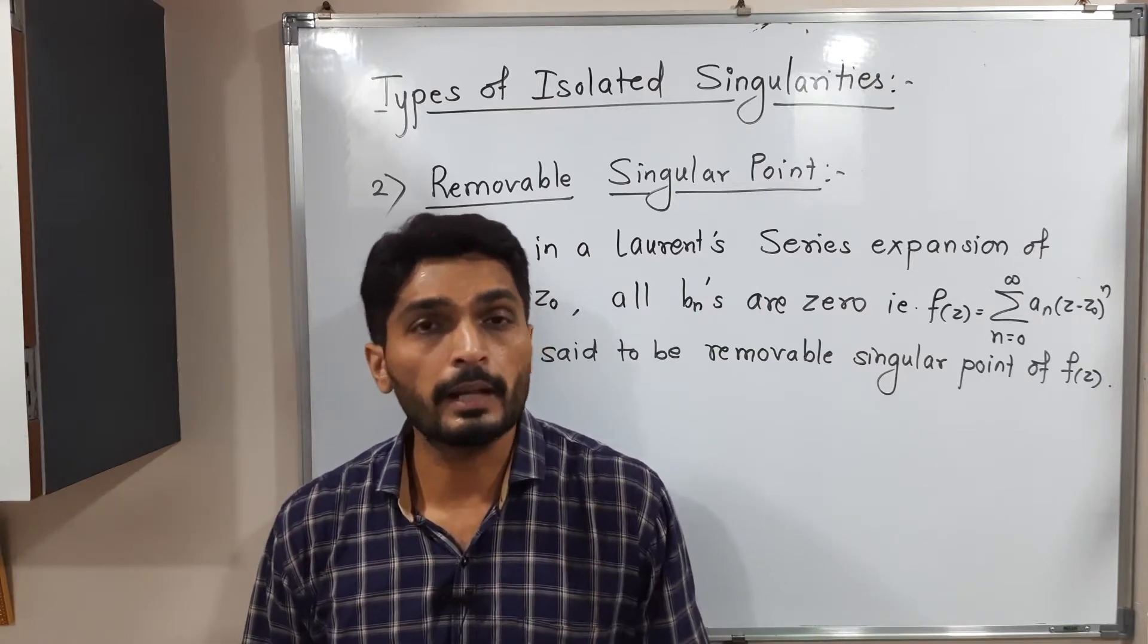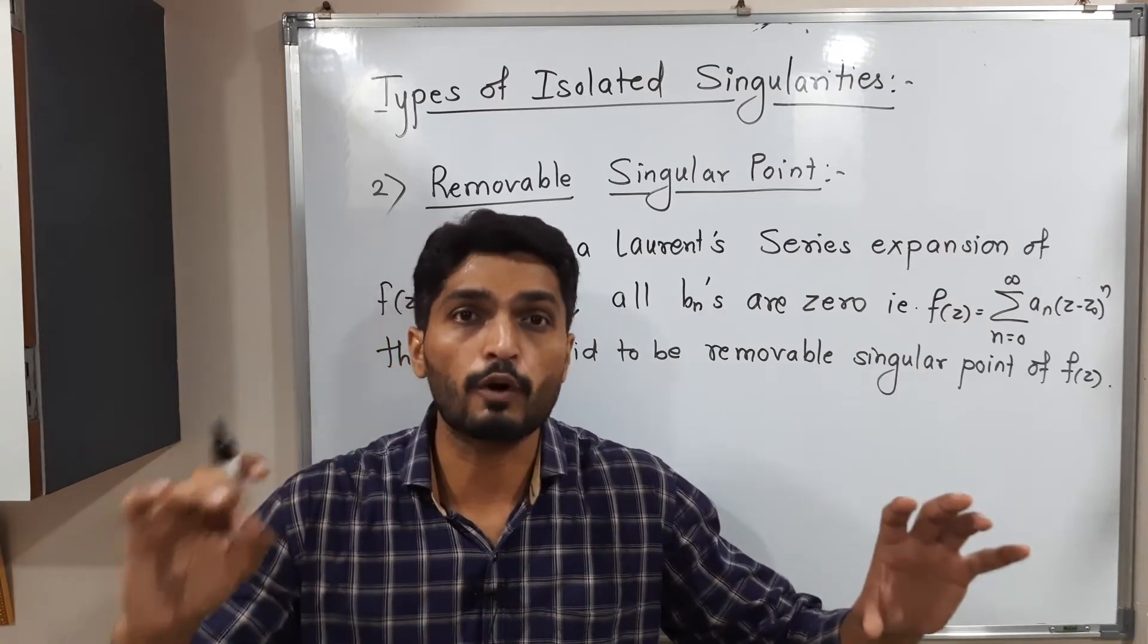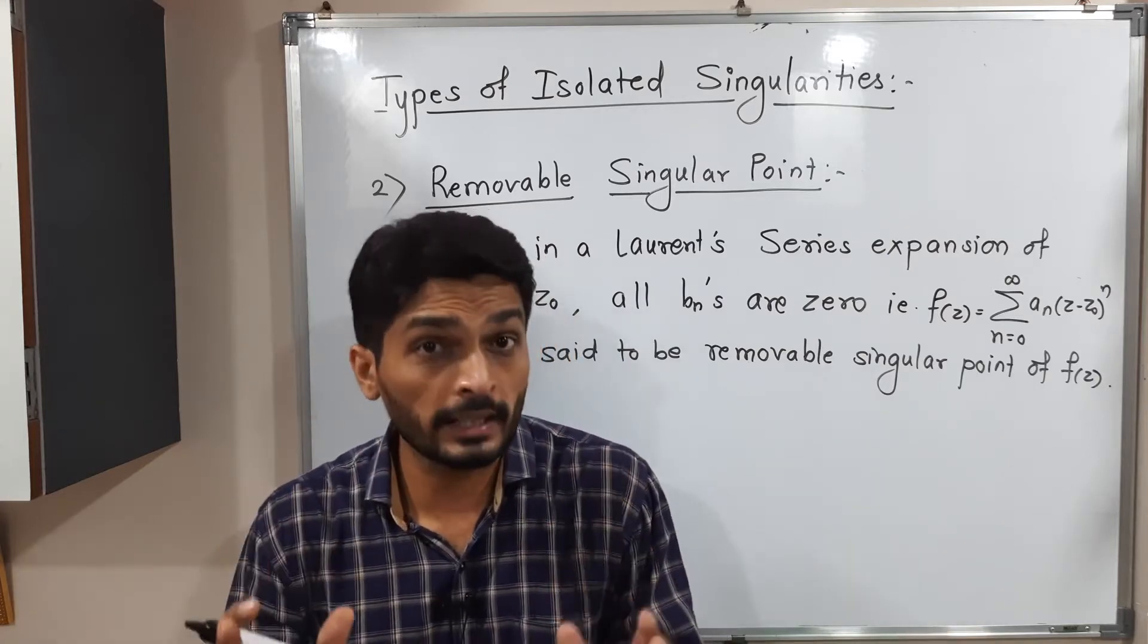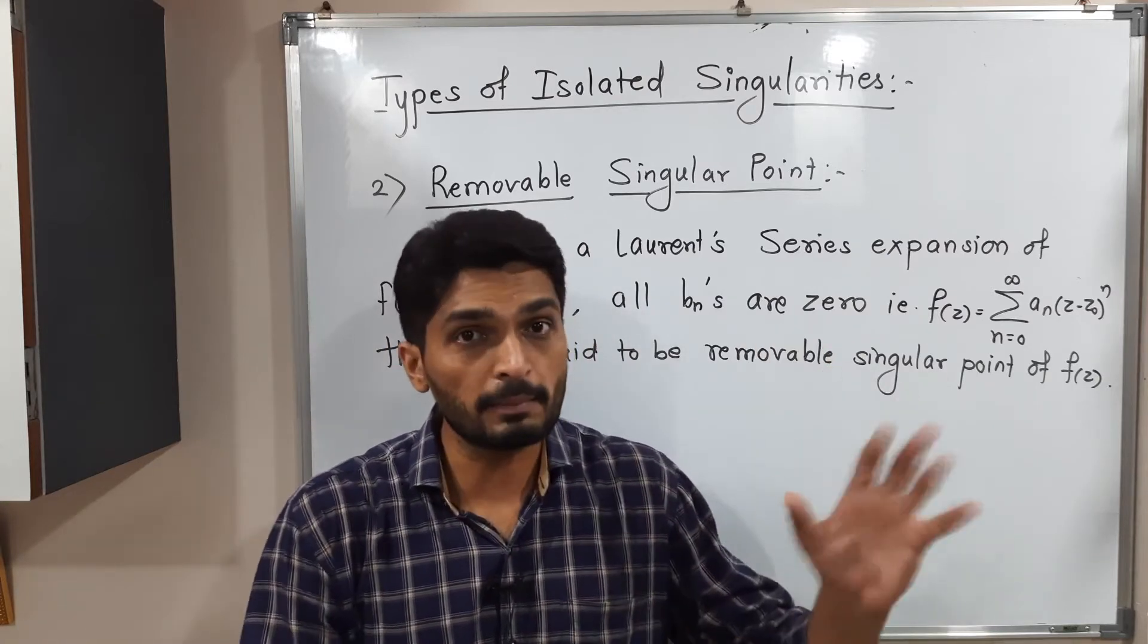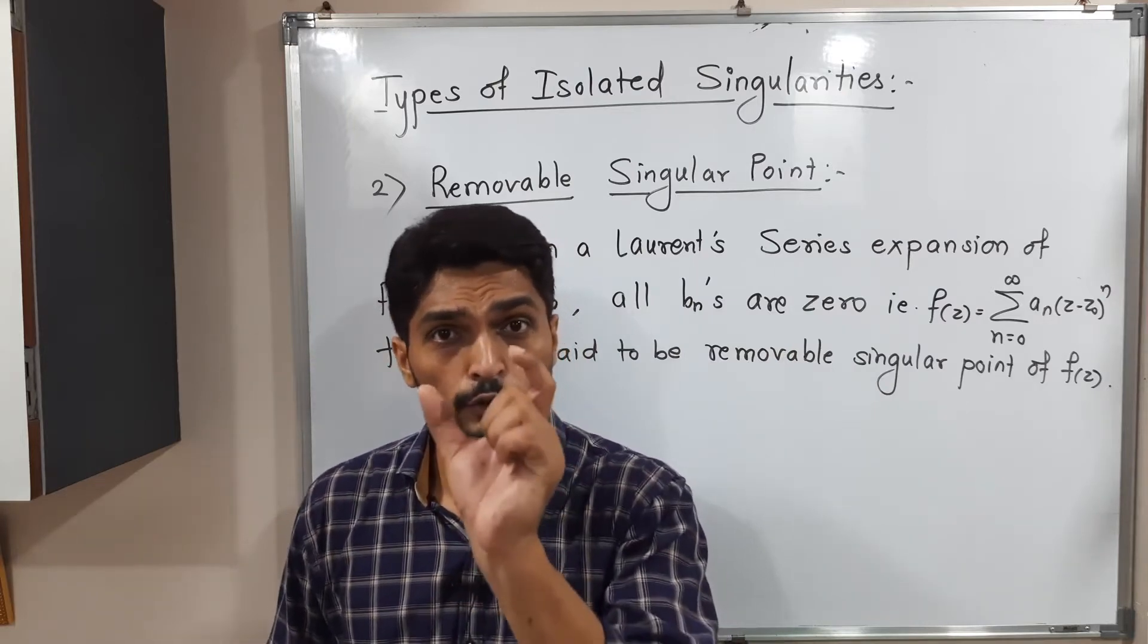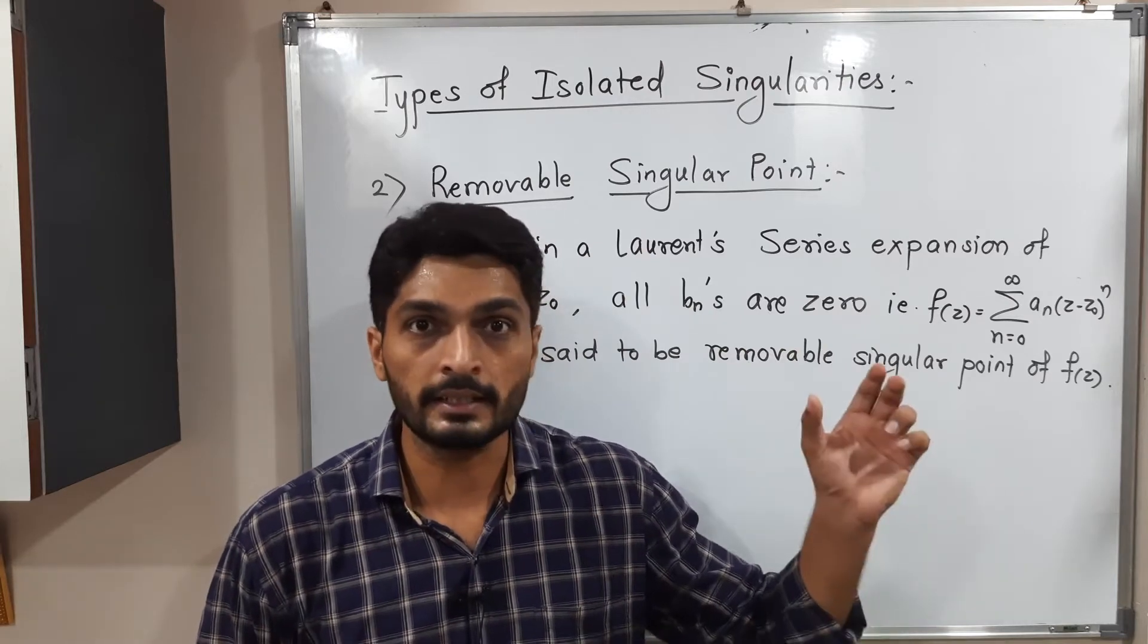We define this with the help of Laurent series. You know that the Laurent series expansion of f(z) at point z₀ has two parts. The first part is called the analytic part. The second part we call the principal part. In the analytic part, the bracket (z - z₀) lies in the numerator, but in the principal part, (z - z₀) lies in the denominator.